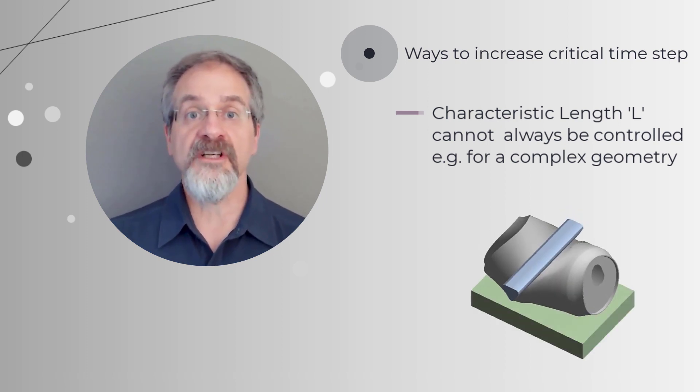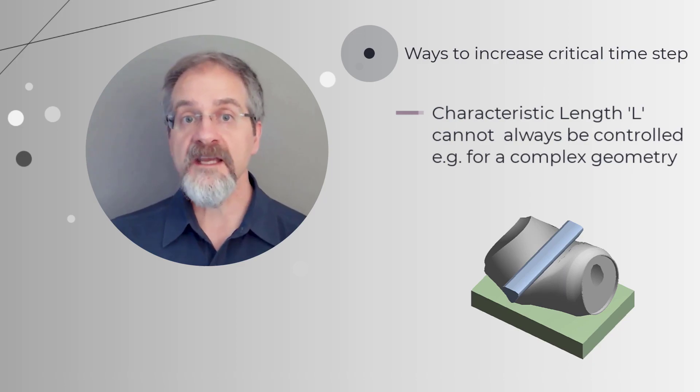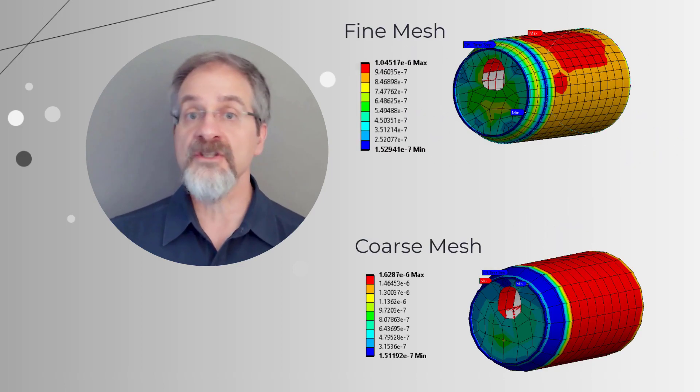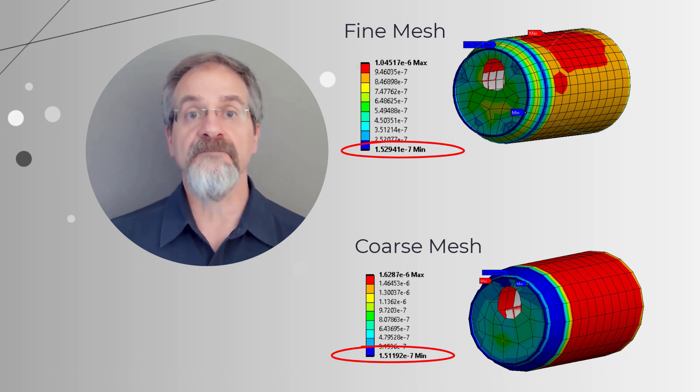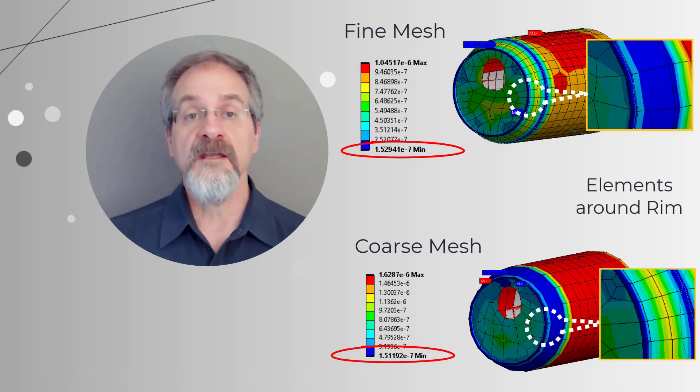Consider this example of crushing of a can. In this case, we see that using a coarser mesh does not lead to any significant increase in the critical time step. The reason for this is the critical time step for this geometry is controlled by the elements at the rim of the can.